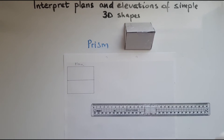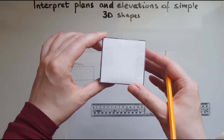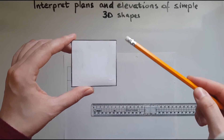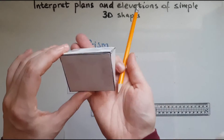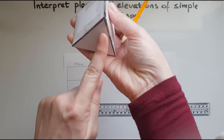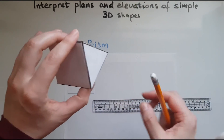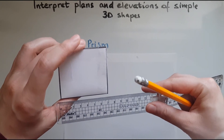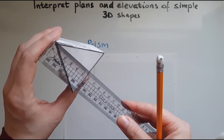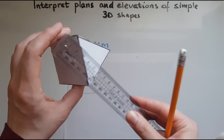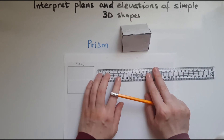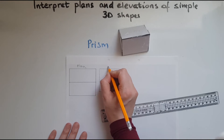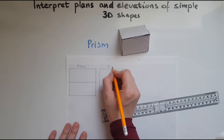Now we'll look at the front elevation. At the front, we just see a rectangle. However, we need to be careful not to just measure these dimensions, because this is not the real height of the prism. The height of the prism can be measured here — that's what we're going to use. The length is seven centimetres as we said earlier, and the height is 5.5 centimetres. So we can call this the front elevation.